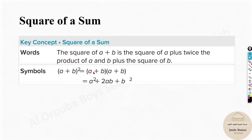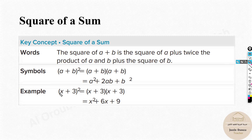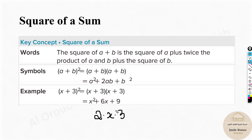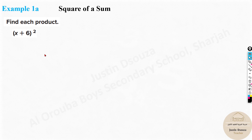You don't need to multiply each and every time when the terms are the same — you can just use this formula for simplicity. For example, (x+3)²: the first term is x so it becomes x², the middle term is 2 times x times 3 which is 6x, and the last term is 3 squared which is 9.